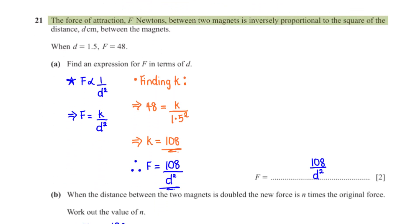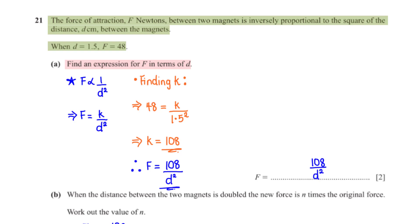The force of attraction F newtons between two magnets is inversely proportional to the square of the distance d centimetres. When d = 1.5, F = 48. Find an expression for F in terms of d. F = k over d². Substituting gives 48 = k over 1.5², so k = 48 times 2.25 = 108. Therefore F = 108 over d².